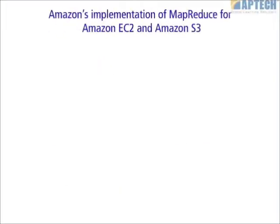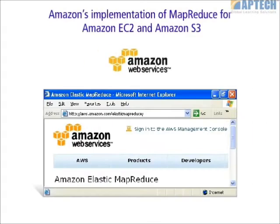Amazon Elastic MapReduce is Amazon's implementation of MapReduce for Elastic Compute Cloud, also called EC2, and Simple Storage Service, also called S3.